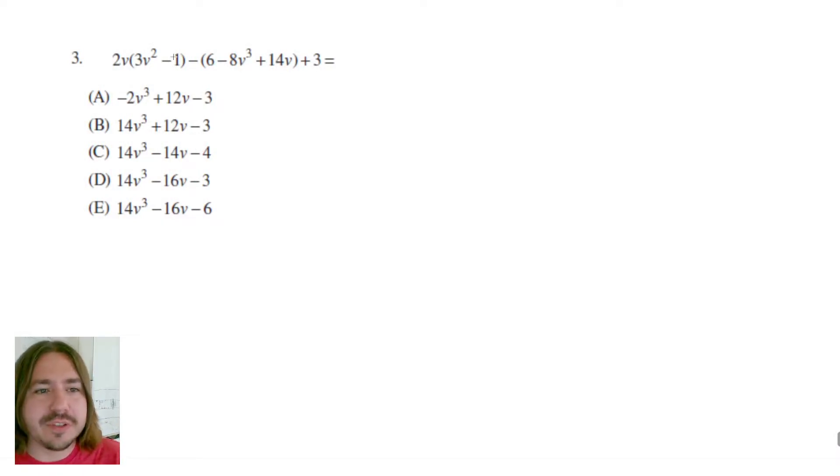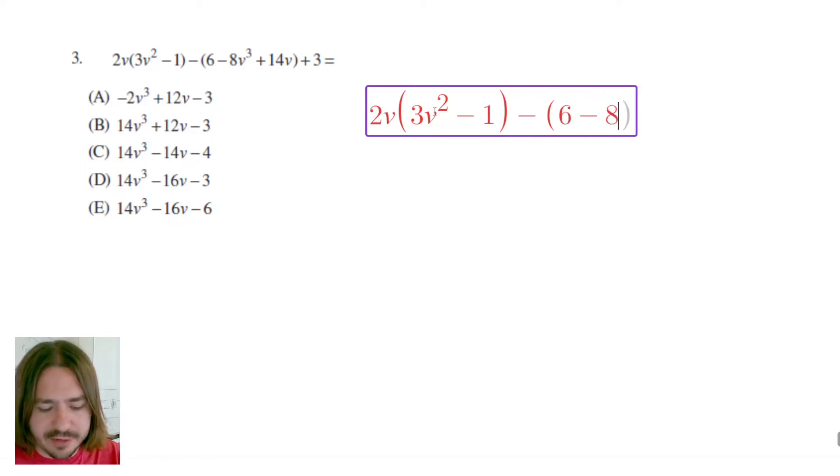On number 3 they're asking us to simplify this expression. So I'm just going to retype it all out so we can see how this works step by step. We have 2v times the quantity 3v squared minus 1 minus the entire quantity 6 minus 8v cubed plus 14v, and then we have a little plus 3 on the end there.